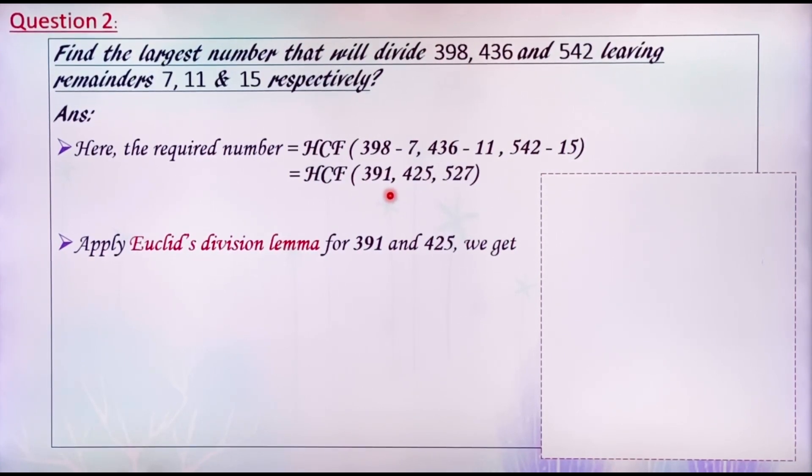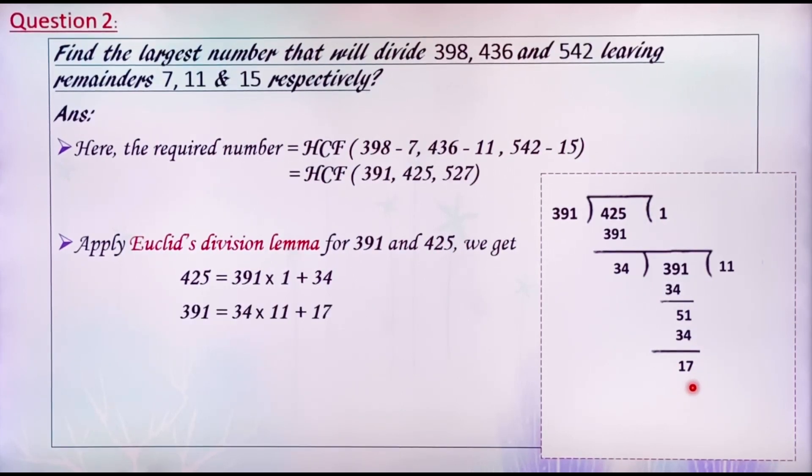Here, I would like to find the HCF of 425 and 391 first. According to Euclid's division algorithm, we get 425 equals 391 into 1 plus 34. 391 equals 34 into 11 plus 17. 34 equals 17 into 2 plus 0. Therefore, the HCF of 391 and 425 is 17.